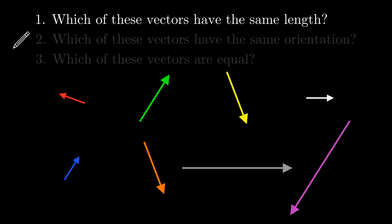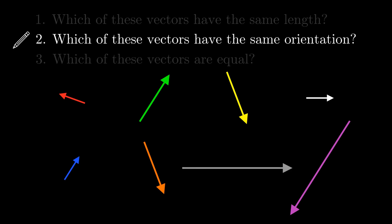Next, which of these vectors have the same orientation? First, there are these two vectors pointing to the right. There are also these two vectors pointing down and to the right. This one here pointing up and to the left is by itself.